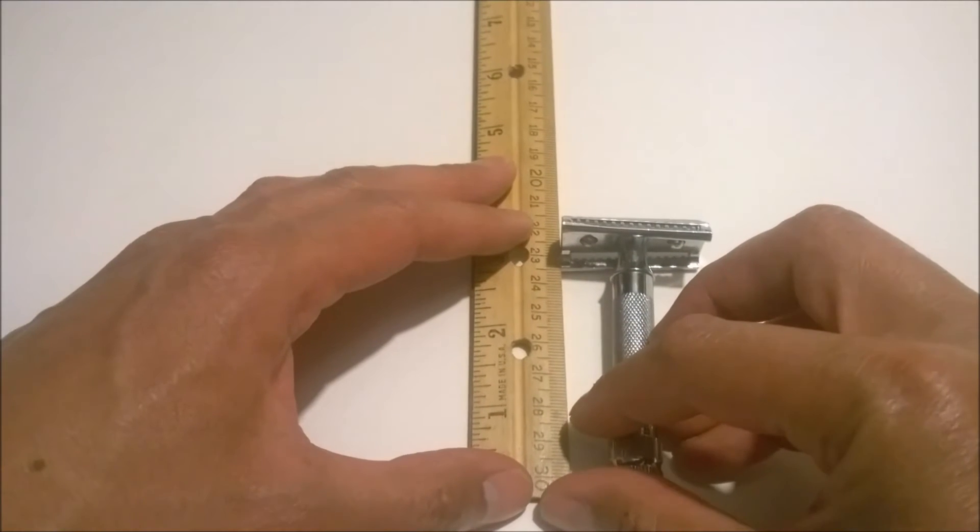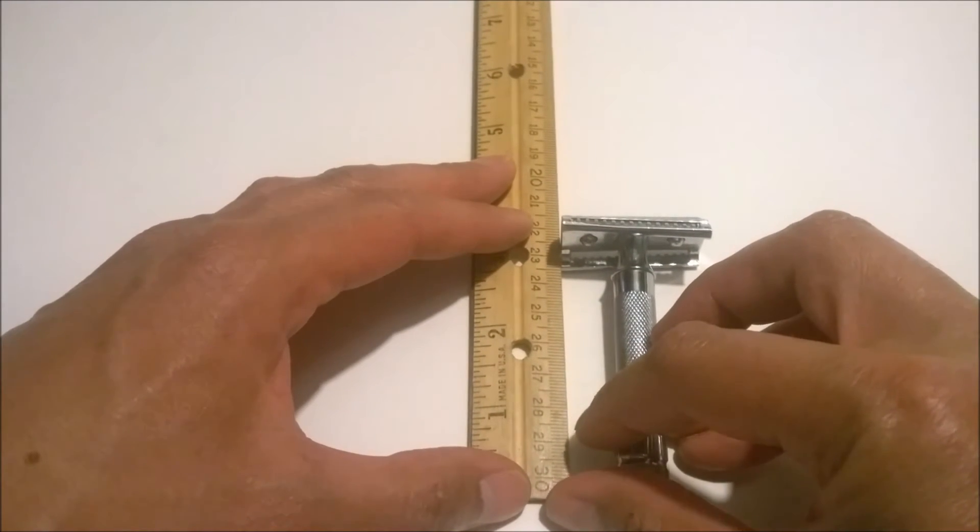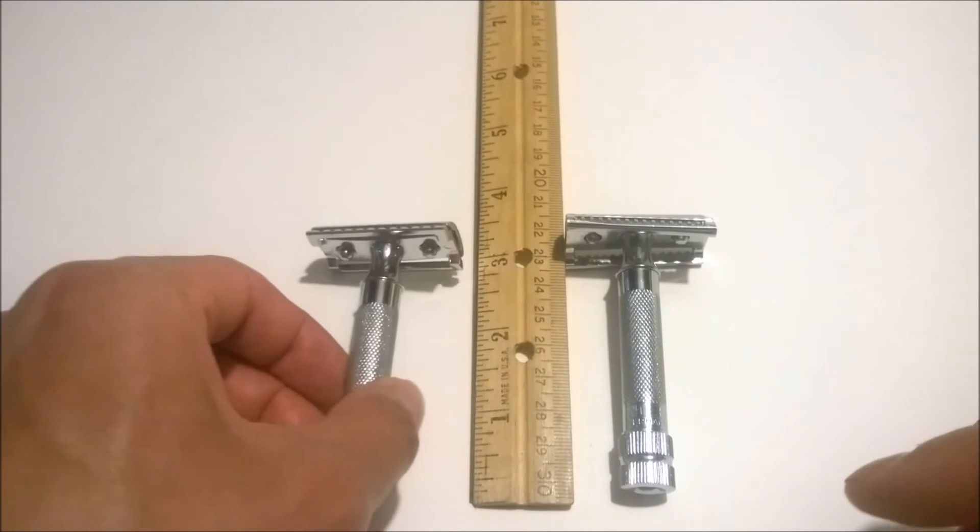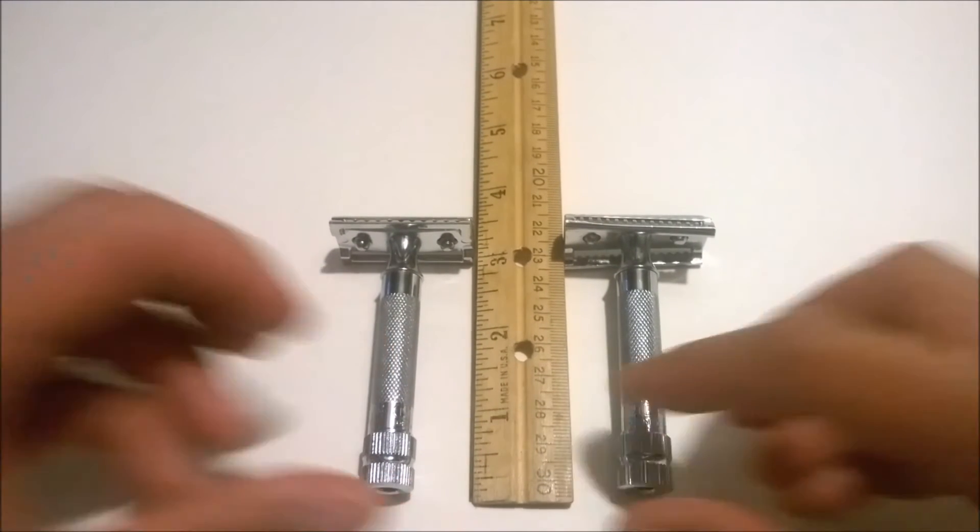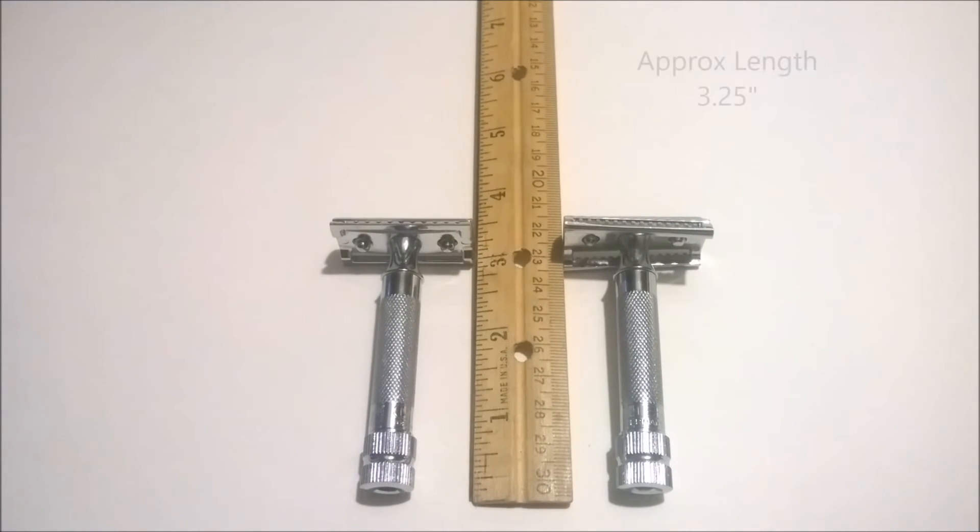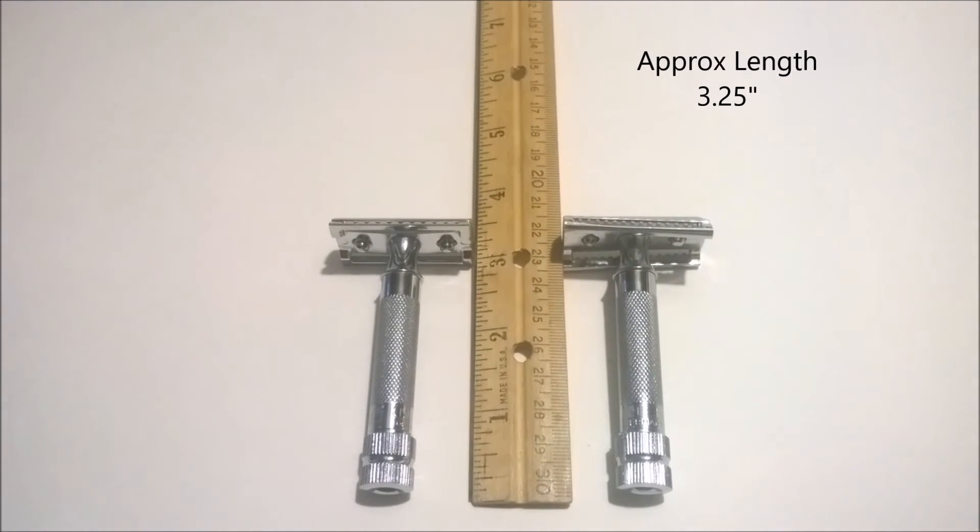The 37C measures roughly the same length as its safety bar counterpart, the Mercure 34C. They measure roughly three and a quarter inches in length and weigh about 2.8 ounces according to our scale.